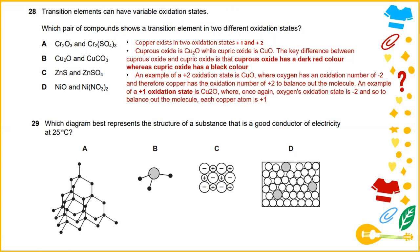The key difference between cuprous oxide and cupric oxide is that cuprous oxide has a dark red color, whereas cupric oxide has a black color. An example of oxidation state plus two is CuO, where oxygen has an oxidation number of minus two and therefore copper has the oxidation number of plus two to balance out the molecule. In Cu2O, each copper atom is plus one. The answer for this is 28B.